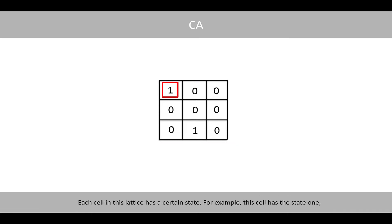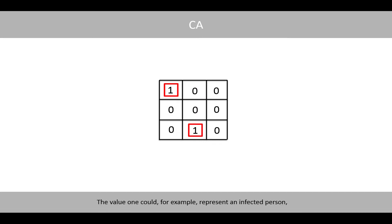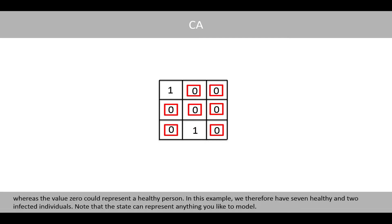Each cell in this lattice has a certain state. For example, this cell has a state of 1, whereas this cell has a state of 0. The value 1 could for example represent an infected person, whereas the value 0 could represent a healthy person. In this example, we therefore have seven healthy and two infected individuals. Note that the state can represent anything you like to model.